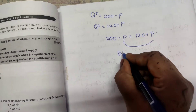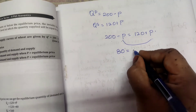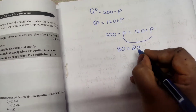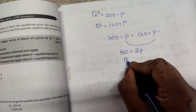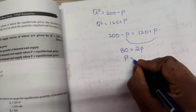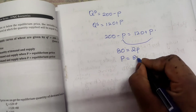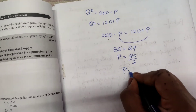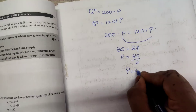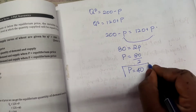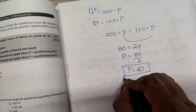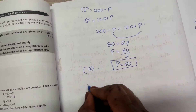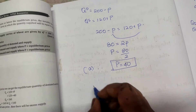So 200 minus 120 gives us 80, which equals 2P. Taking P to one side, 80 divided by 2 gives us P equals 40. So we have found out the equilibrium price.